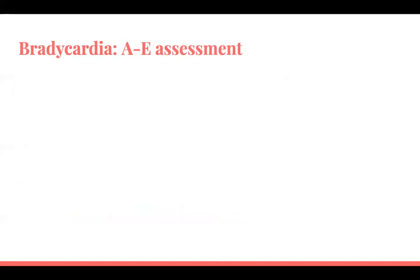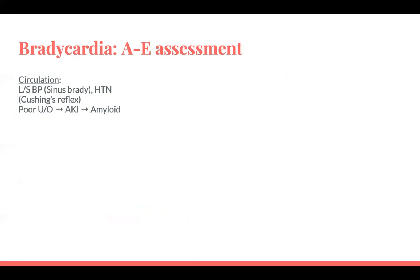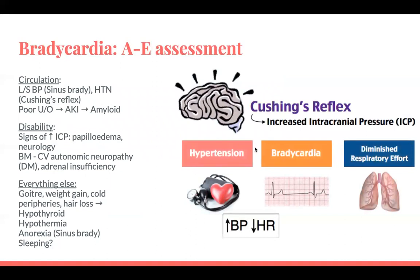Moving on to bradycardia. The A-to-E assessment is similar for A and B — check for hypoxia and signs of heart failure. Differences in circulation: perform lying and standing blood pressure, as patients with sinus bradycardia often have orthostatic hypotension. Sometimes they present with hypertension — Cushing's reflex may be present if there's raised intracranial pressure. Poor urine output and AKI — think amyloid and possible complete heart block. Disability: raised intracranial pressure, papilloedema, focal neurology, and check BMs in diabetics — cardiovascular autonomic neuropathy and adrenal insufficiency can both cause bradycardia.